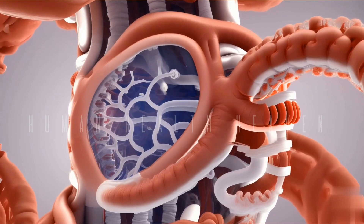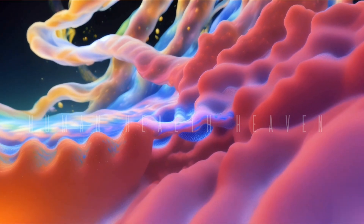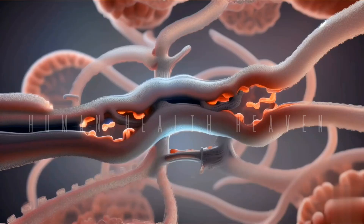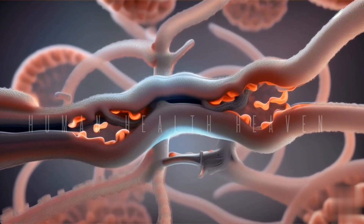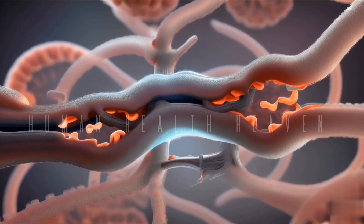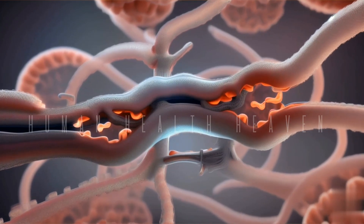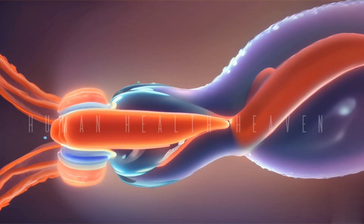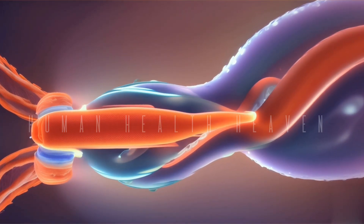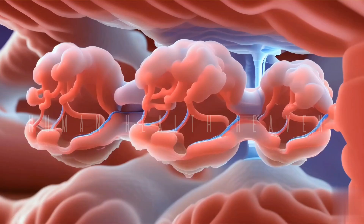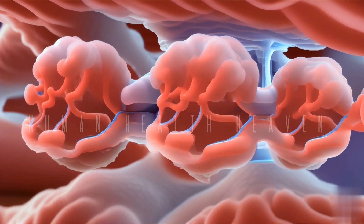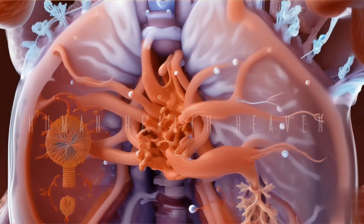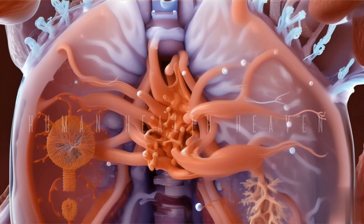Elasticity: alveoli have elastic properties that enable them to expand and contract during inhalation and exhalation. This elasticity aids in the efficient movement of air in and out of the lungs. Ciliary action: although alveoli do not have cilia, the movement of mucus produced in the respiratory bronchioles, carrying trapped particles toward the throat, is facilitated by ciliary action in the larger airways. Alveoli are vital for the respiratory system's main function of exchanging oxygen and carbon dioxide, ensuring that the body receives oxygen for cellular processes and expelling waste gases.